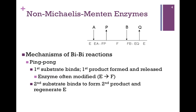Another type of bi-bi reaction is called a ping-pong mechanism, and that's illustrated at the top of the screen here. We have our free enzyme — it binds the first substrate, and then it picks up a group from A. Now we have a modified form of the enzyme, illustrated as F here, and we've formed our first product, P. P is released, and then we bind our second substrate, B, which gets converted to our final product, Q. Q is released, and here's our original form of the enzyme. So substrate in, product off, second substrate in, second product off — that's why it's called a ping-pong mechanism.